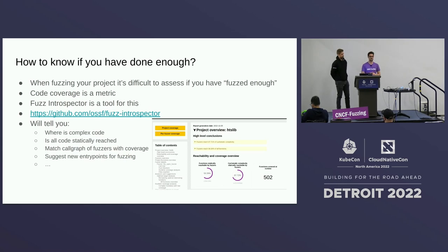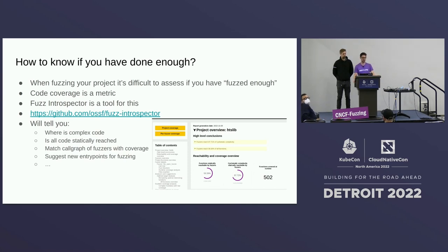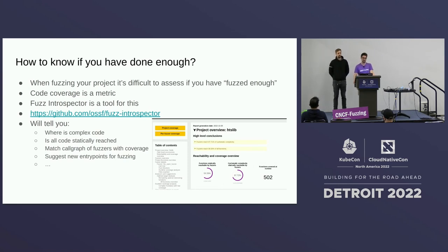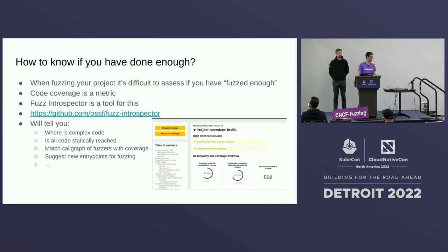When you have started fuzzing your project, the question is: have you done enough? This is not trivial to assess. You can use code coverage as the main aspect, but even code coverage can lie — you can reach different states of code depending on which entry point you hit. We have this tool, Fuzz Introspector, from OSSF (Open Source Security Foundation). It will tell you a lot about the threat model of your project — how to attack it, where your complex code is, where the entry points are, and whether everything is statically reached. It can overlap the dynamic analysis element of fuzzing with static program analysis.